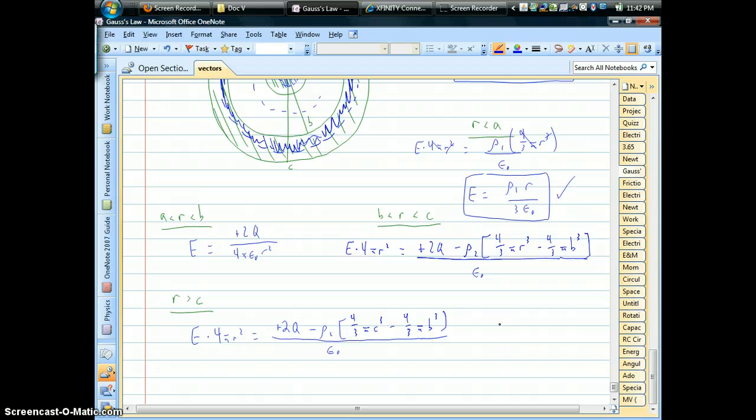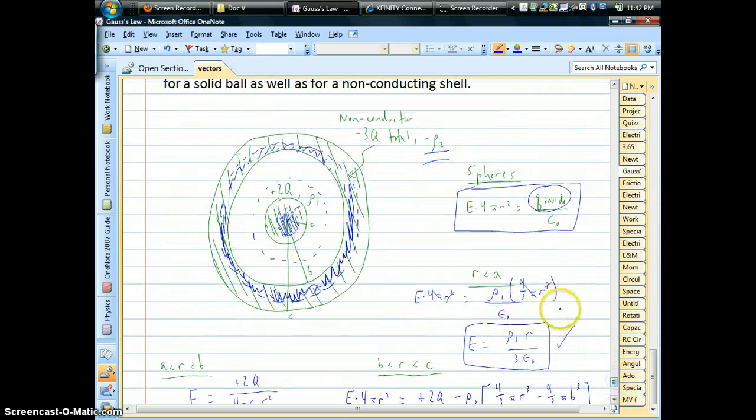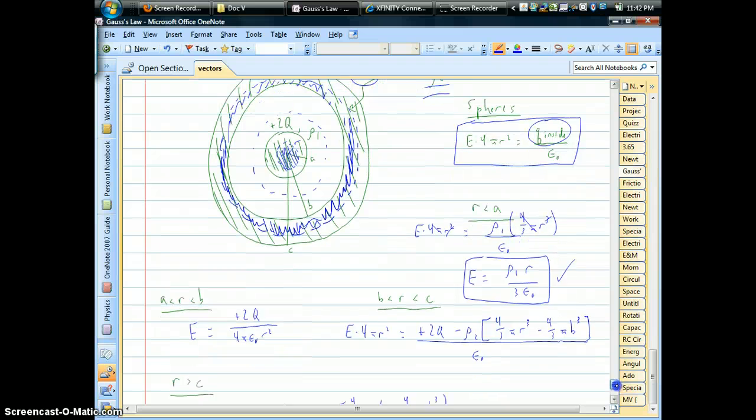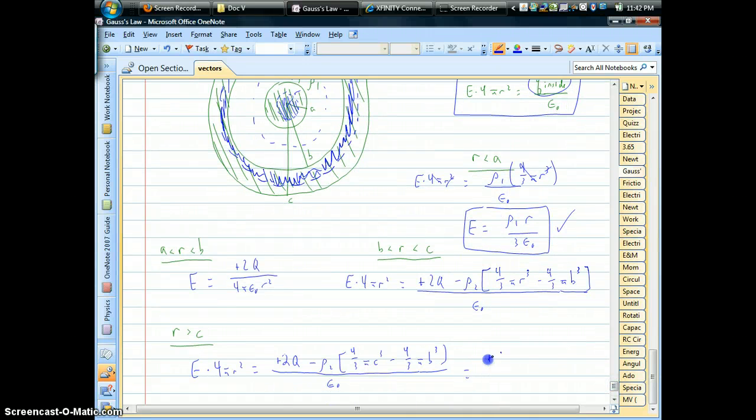So, we could do it that way. Or, more easily, if we happen to know, in this case, what the total charge of the non-conductor is. That's negative 3q. We could make it a whole lot easier and just say your total charge is the plus 2q minus the 3q, over epsilon, and then you could solve for electric field.